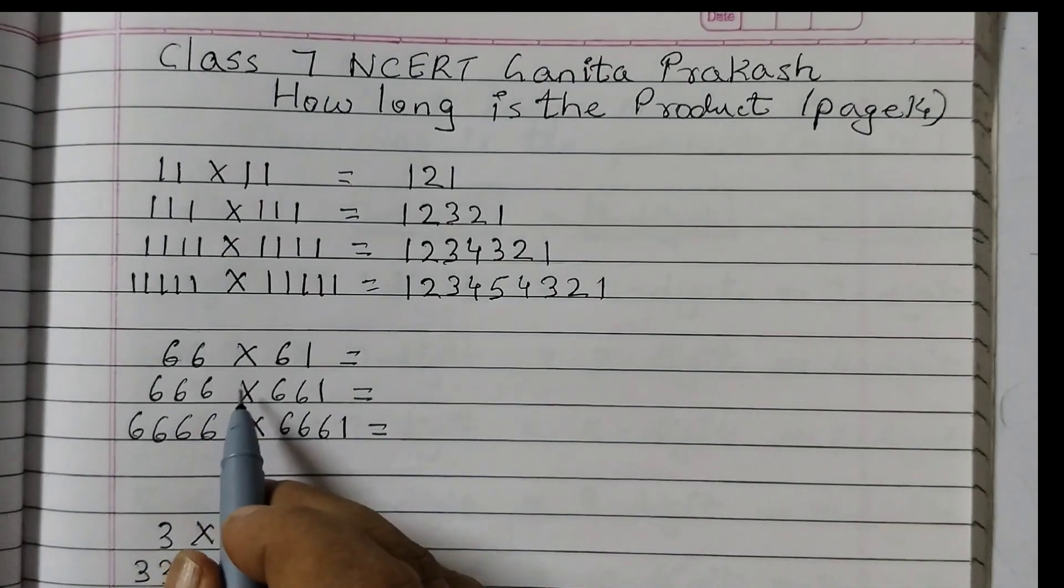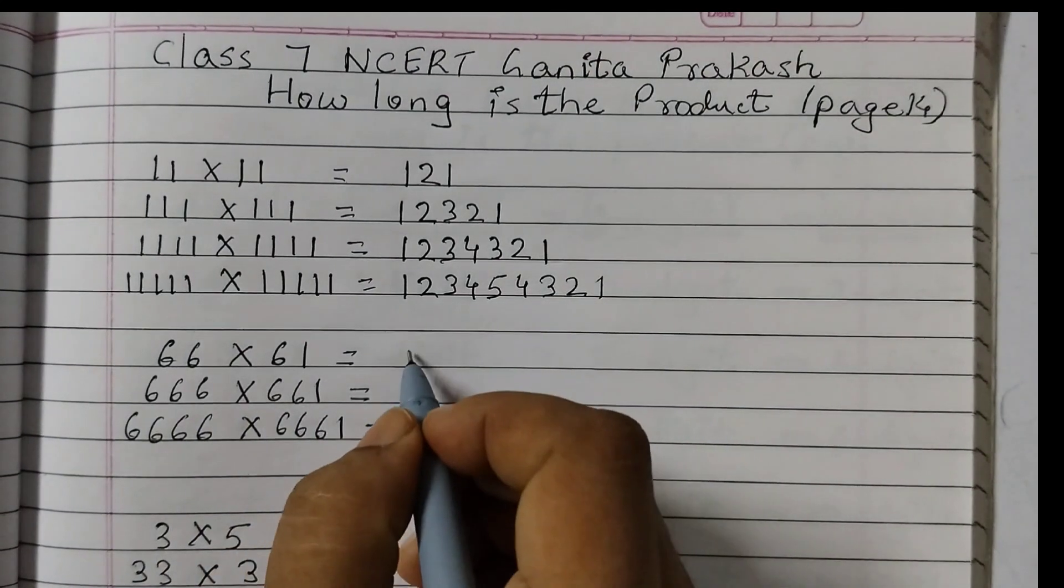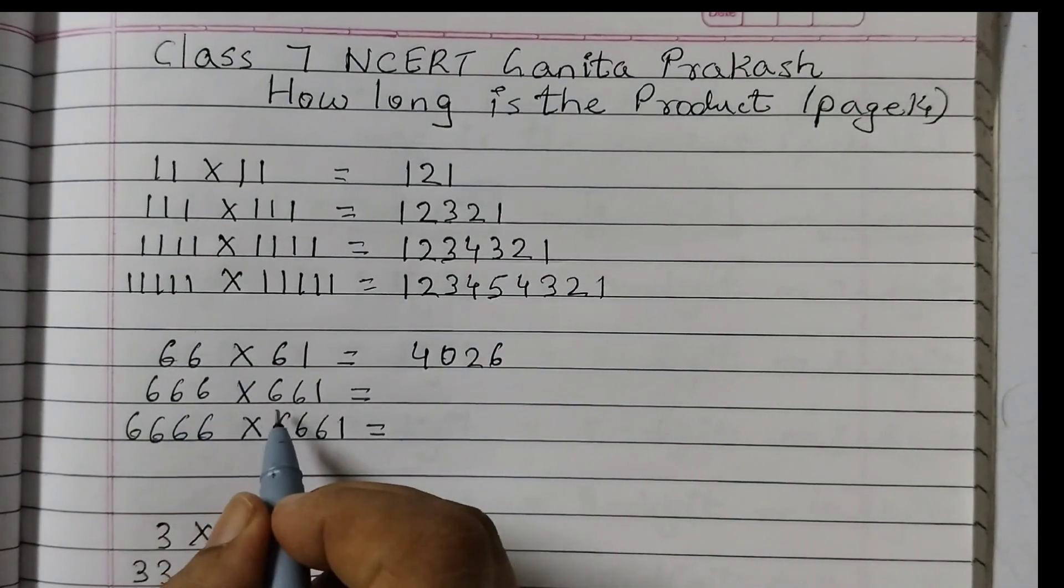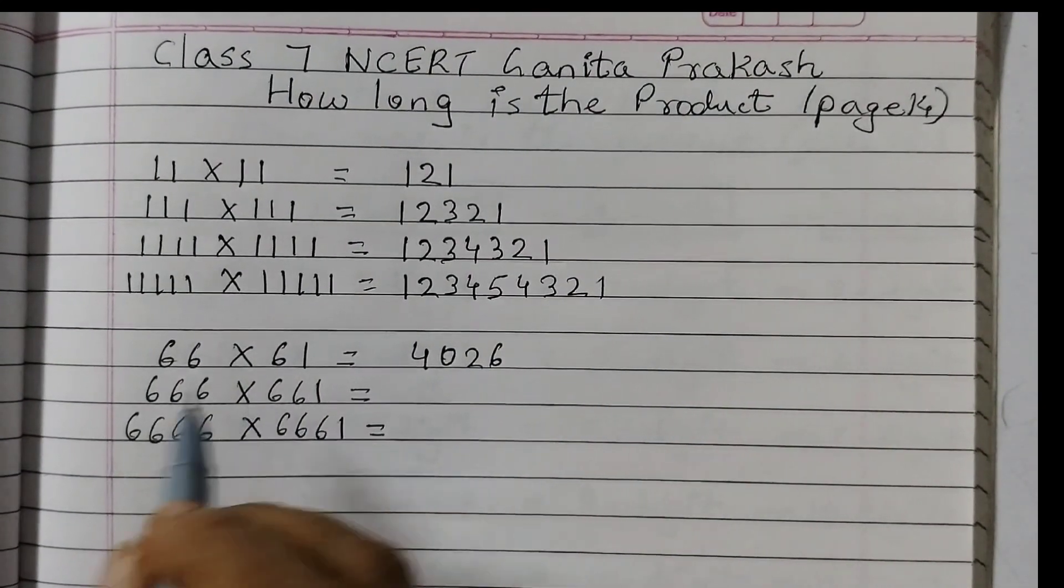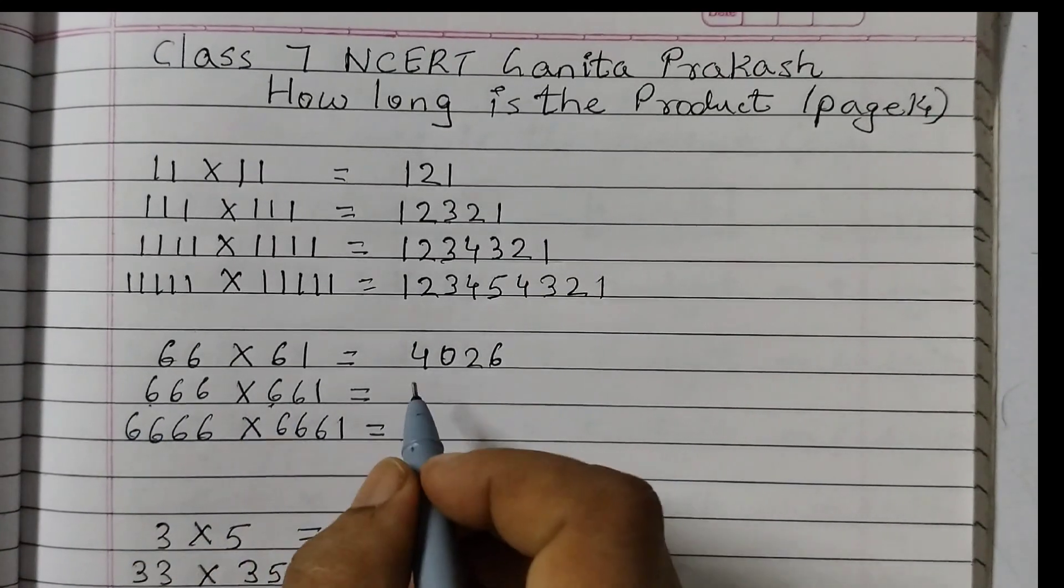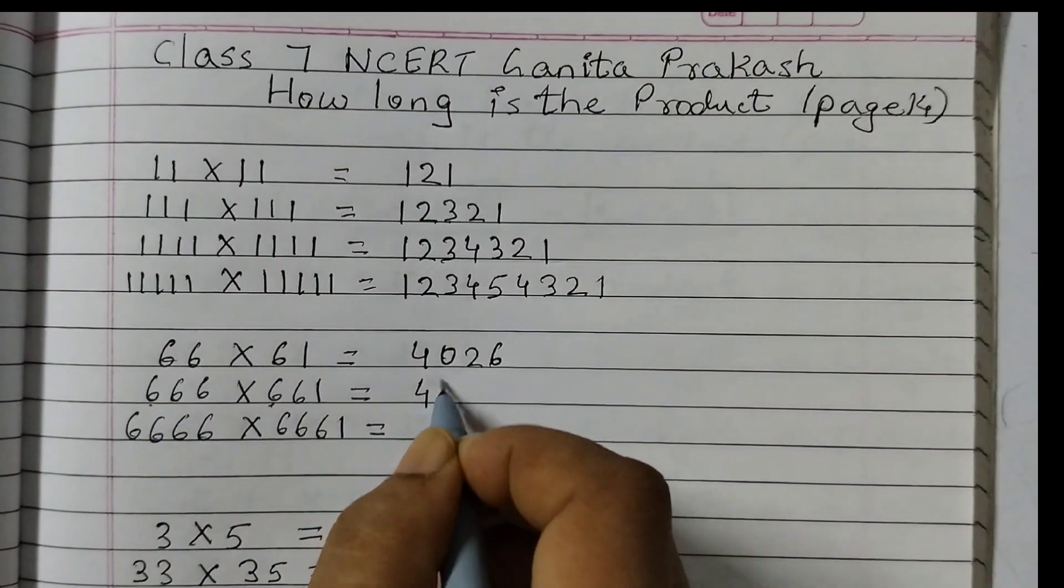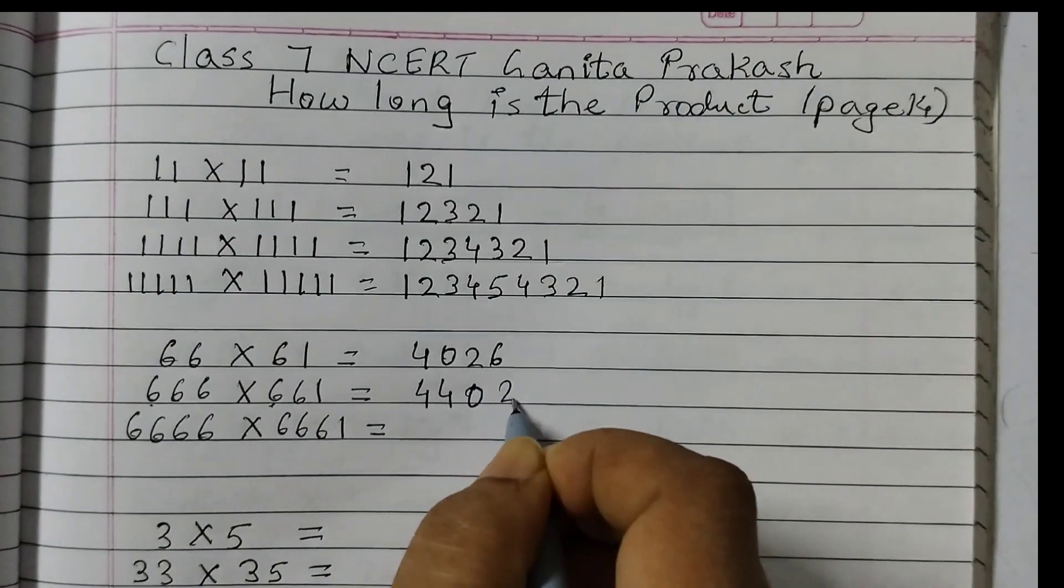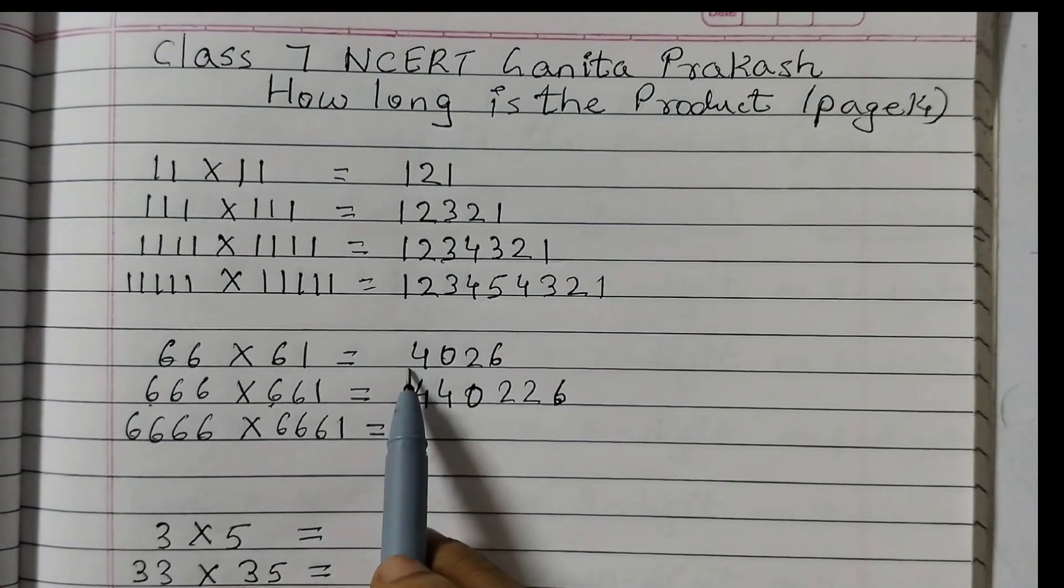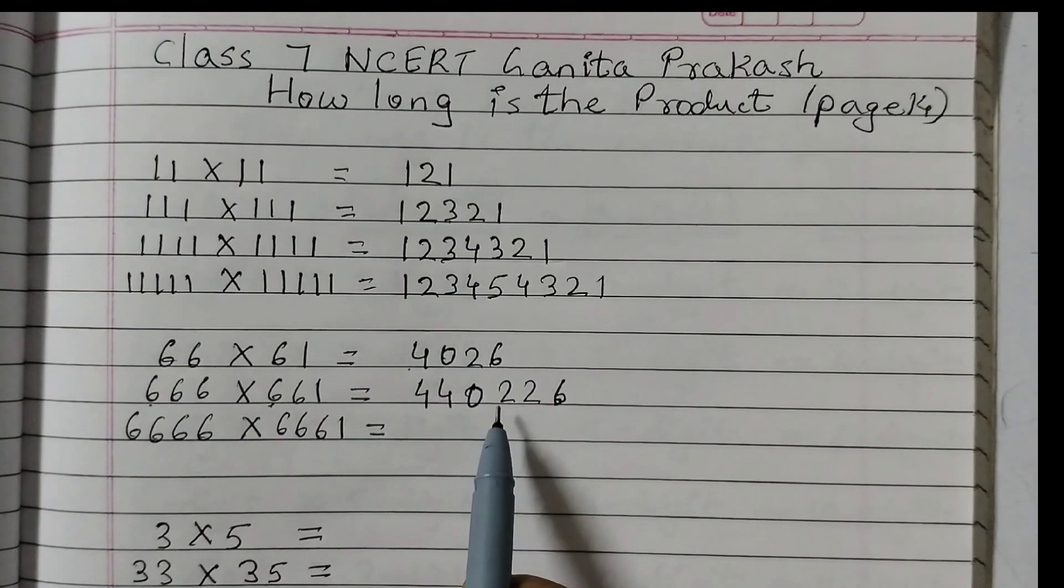Next pattern 66 into 61 is 4026. 666 into 661. What are we doing? We are just adding one 6 here. Extra 6. Right? So the answer would be 44, 0226. So what is the pattern here? We are adding one extra 4 and one extra 2.